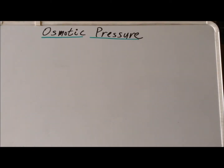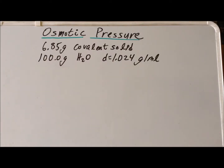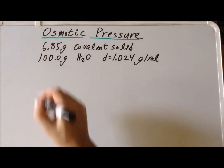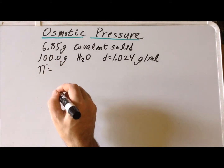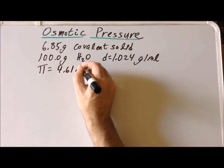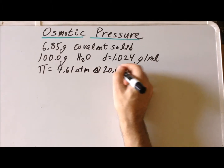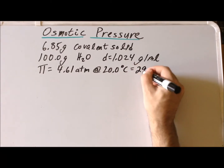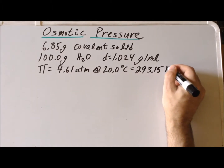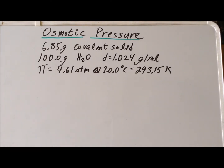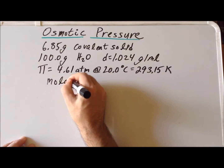Hello. In this video, we are going to solve a problem dealing with osmotic pressure. 6.85 grams of a covalent solid are dissolved in 100.0 grams of water. The density of the solution is 1.024 grams per milliliter. This solution generates an osmotic pressure of 4.61 atm at a temperature of 20.0 degrees centigrade, which is 293.15 Kelvin. Our objective is to determine the molar mass of this covalent solid.